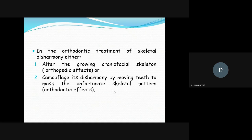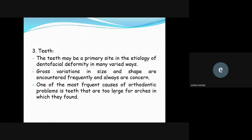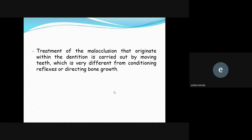Teeth — the teeth may be a primary site in the etiology of dentofacial deformity in many varied ways. Gross variations in size and shape are frequently encountered. There may be a large jaw with small teeth, or a small jaw with large teeth. Tooth size and numbers are also important. Treatment of malocclusion that originates within the dentition is carried out by moving teeth, which is very different from correcting or directing bone growth.